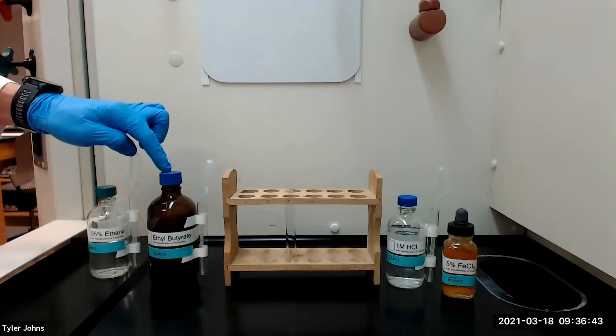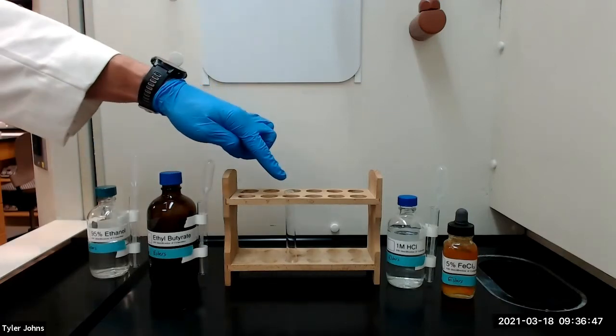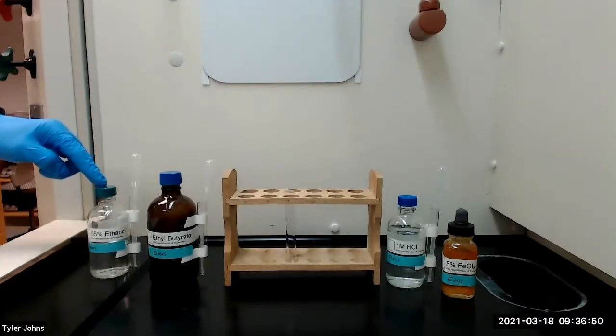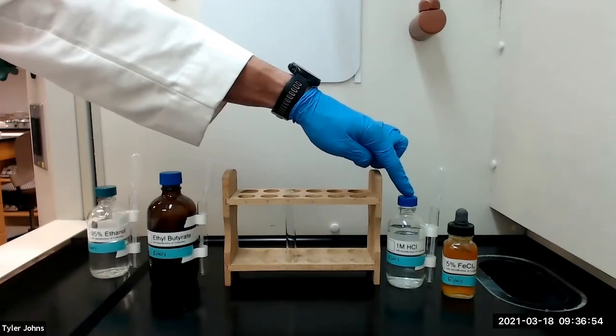We will begin by dissolving a small amount of the test compound ethyl butyrate in a small test tube with one milliliter of 95% ethanol, and we will add one milliliter of one molar hydrochloric acid.